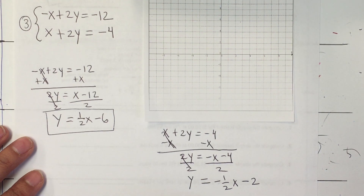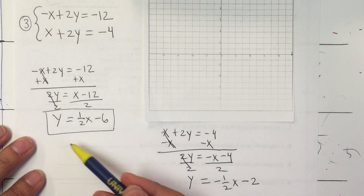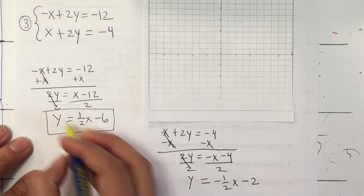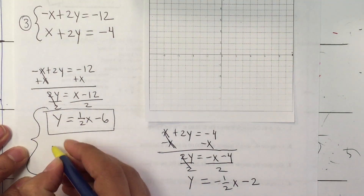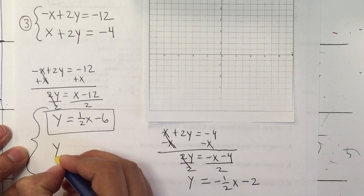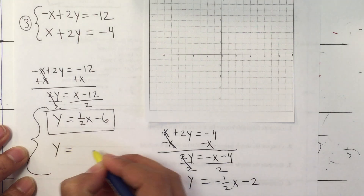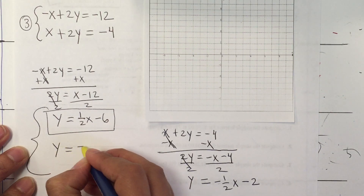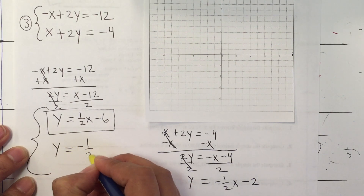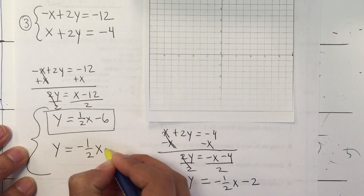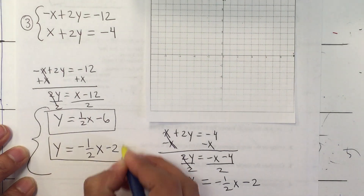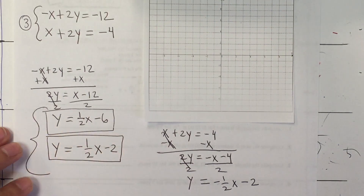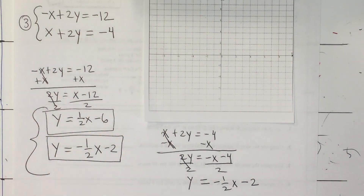I'm going to transfer them over here so I can work with both. The second equation is y = negative (1/2)x minus 2. Now I start graphing.